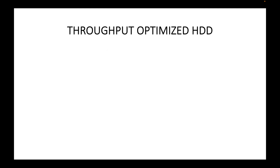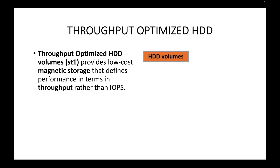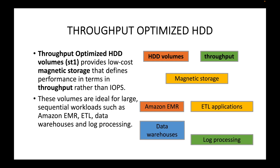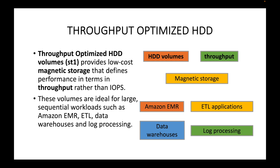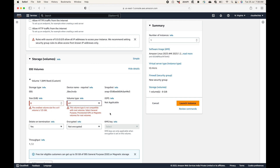Throughput Optimized HDD is a magnetic storage option. Unlike Provisioned IOPS and General Purpose SSD which are solid state disks, Throughput Optimized provides low cost magnetic storage that defines performance in terms of throughput rather than IOPS. These volumes are ideal for large sequential workloads such as Amazon EMR, ETL applications, data warehousing applications, or log processing. There are no IOPS available with this storage type.